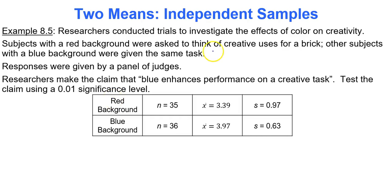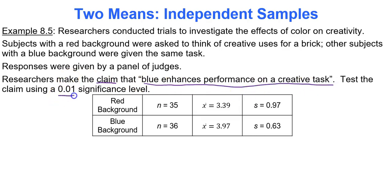Researchers conducted trials to investigate the effects of color on creativity. Subjects with a red background were asked to think of creative uses for a brick; others with a blue background were given the same task. Responses were scored by a panel of judges. The claim is that blue enhances performance on a creative task. Test this claim at the 0.01 level of significance. I'll call the red background folks group 1 and the blue background folks group 2.